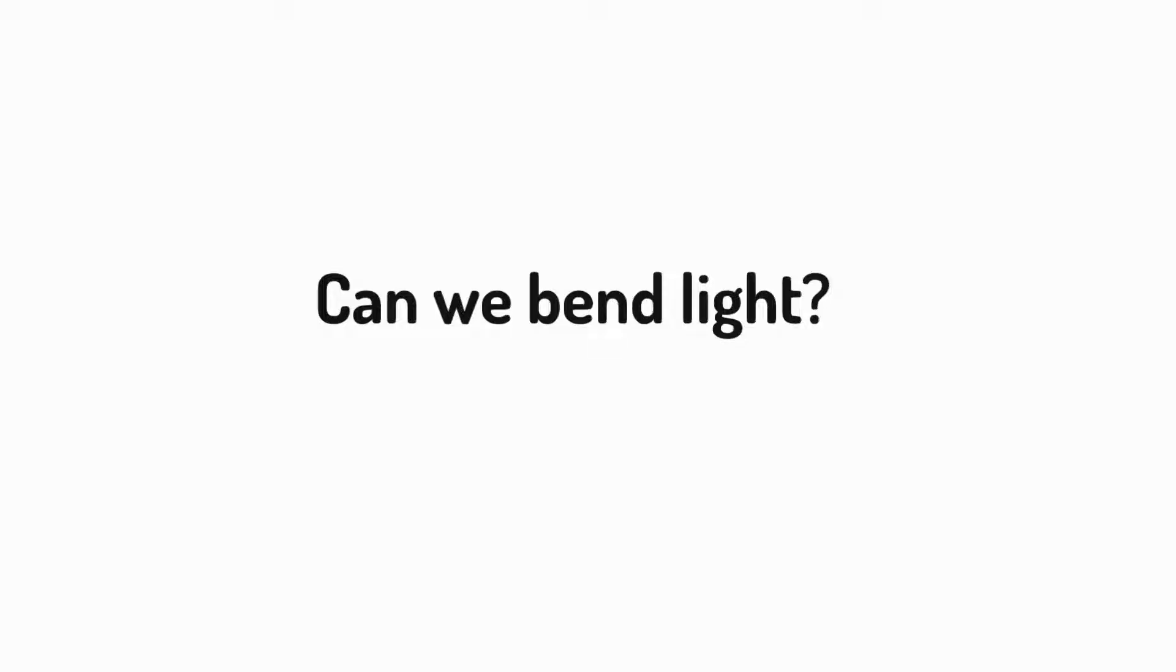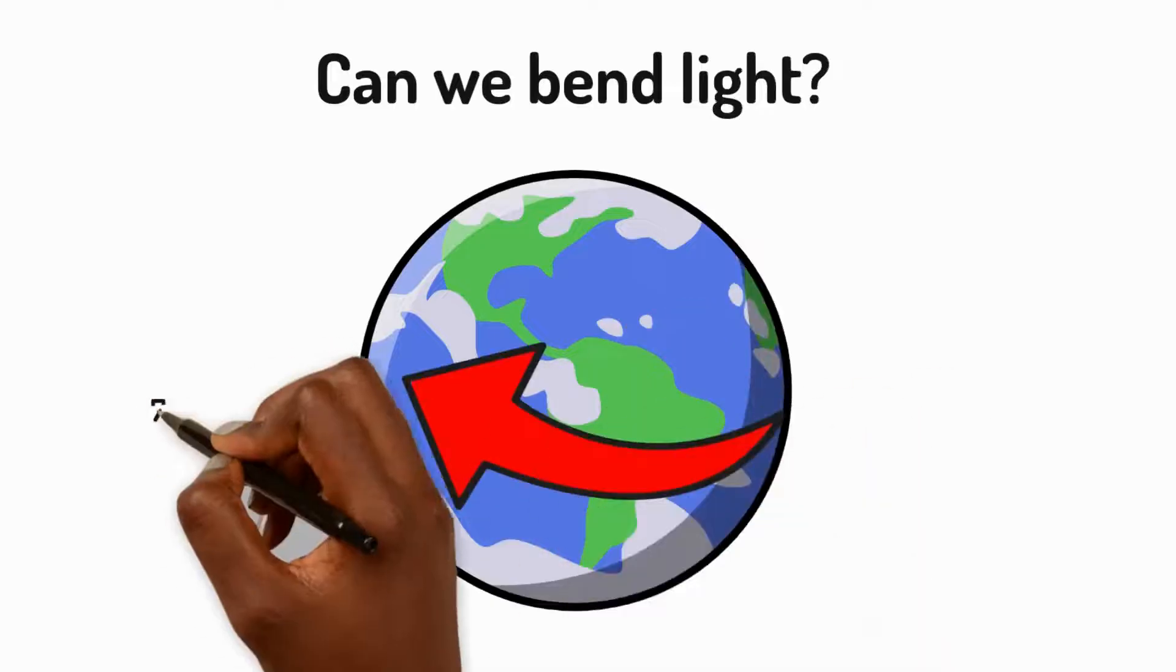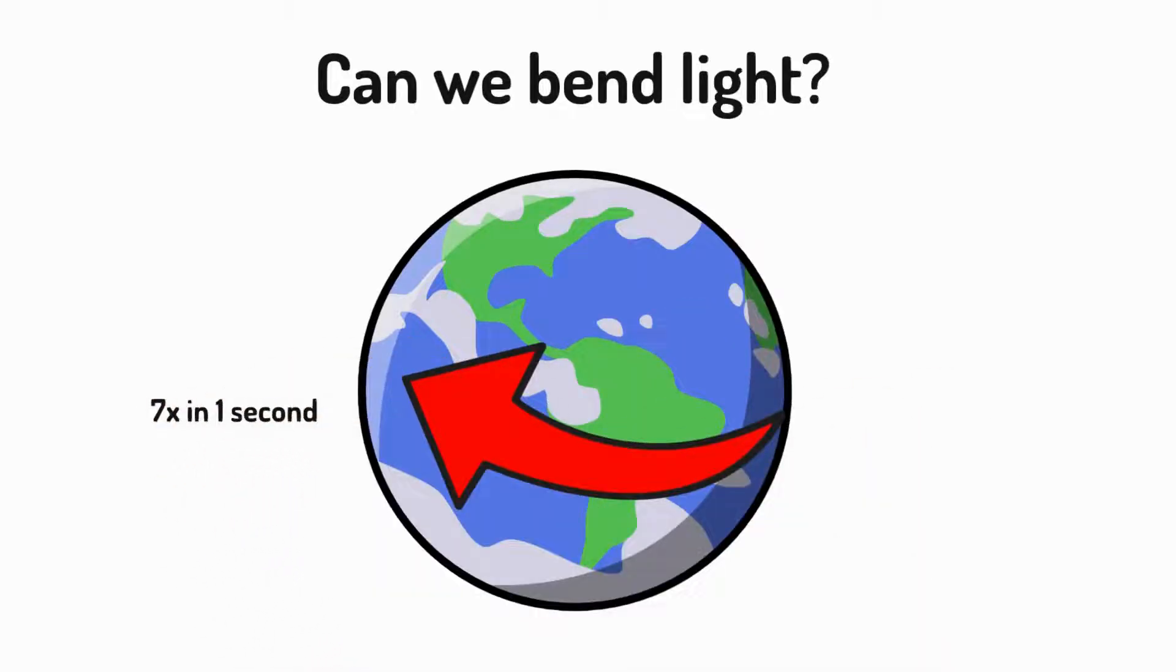Light is the fastest thing on our planet. It can travel around the earth seven times in just one second.